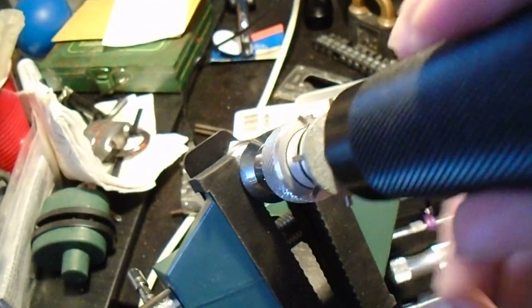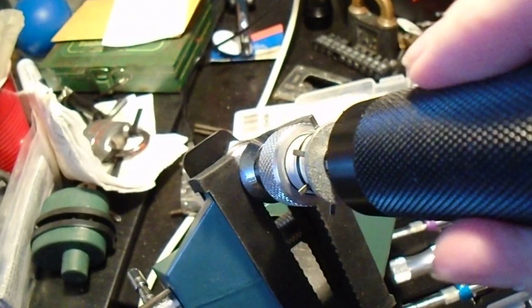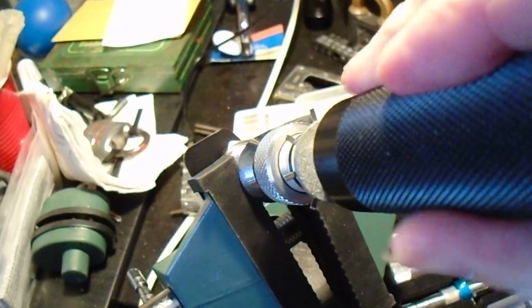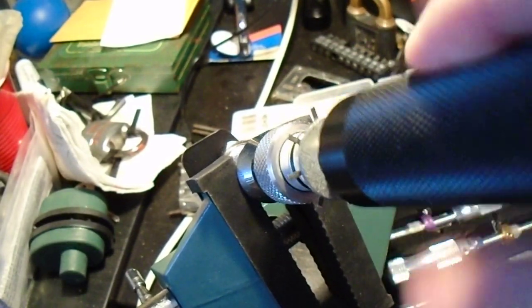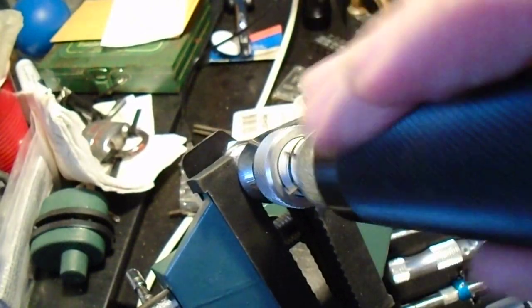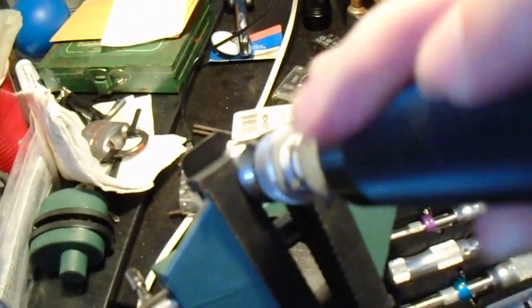And then we're going to reinsert the tool. There we go. Push it in, and turn it back and forth. Back and forth, back and forth. Wiggling it around. And there we go. The lock is now open. None of the pins are giving excessive resistance.